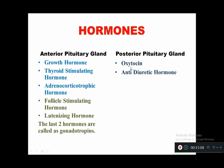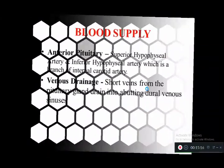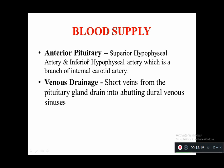Blood supply to the pituitary gland: the anterior pituitary receives blood from the superior hypophysial artery and inferior hypophysial artery, both branches of the internal carotid artery. Venous drainage is through short veins from the pituitary gland into the dural venous sinuses.